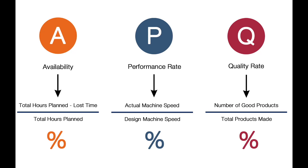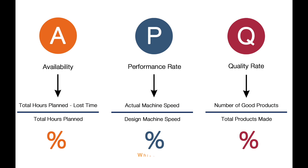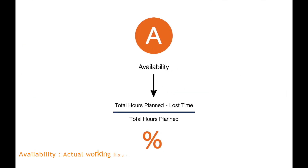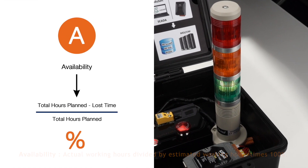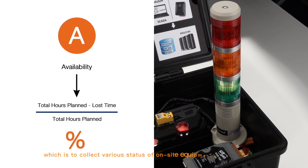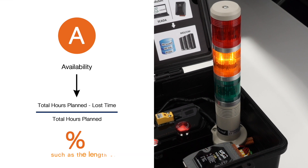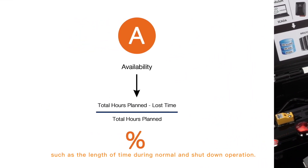So how are the APQ figures collected using ICP Desk products? We collect these figures based on different modules. A — Availability: actual working hours divided by estimated working hours times 100%. This collects the varied status of on-site equipment via the stack light, such as the length of time during normal and shutdown operation.